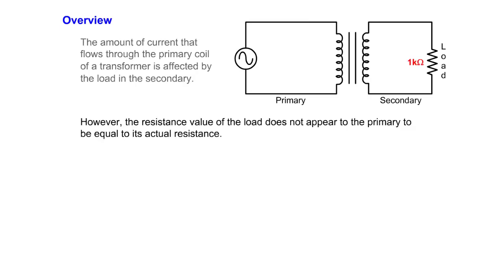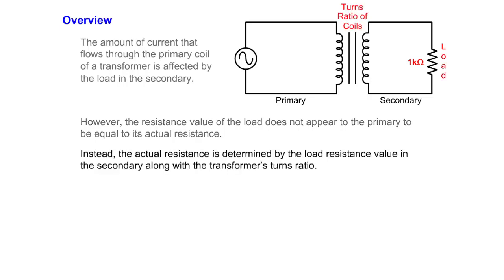However, the resistance value of the load does not appear to the primary to be equal to its actual resistance. Instead, the actual resistance is determined by the load resistance value in the secondary along with the transformer's turns ratio.